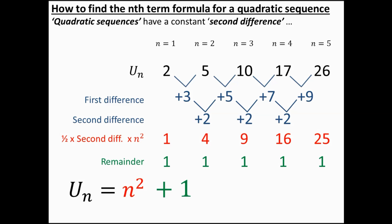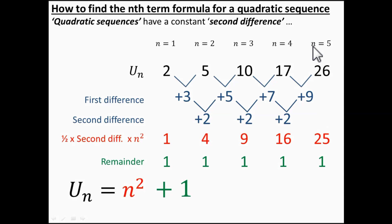Okay, so you should be quite happy with that now. This is the method we're going to follow to find the nth term formula of a quadratic sequence. I recommend that when you're working this out you write out your sequence, the first differences and the second differences in just the way I've done it here. So let's have a look at another example.